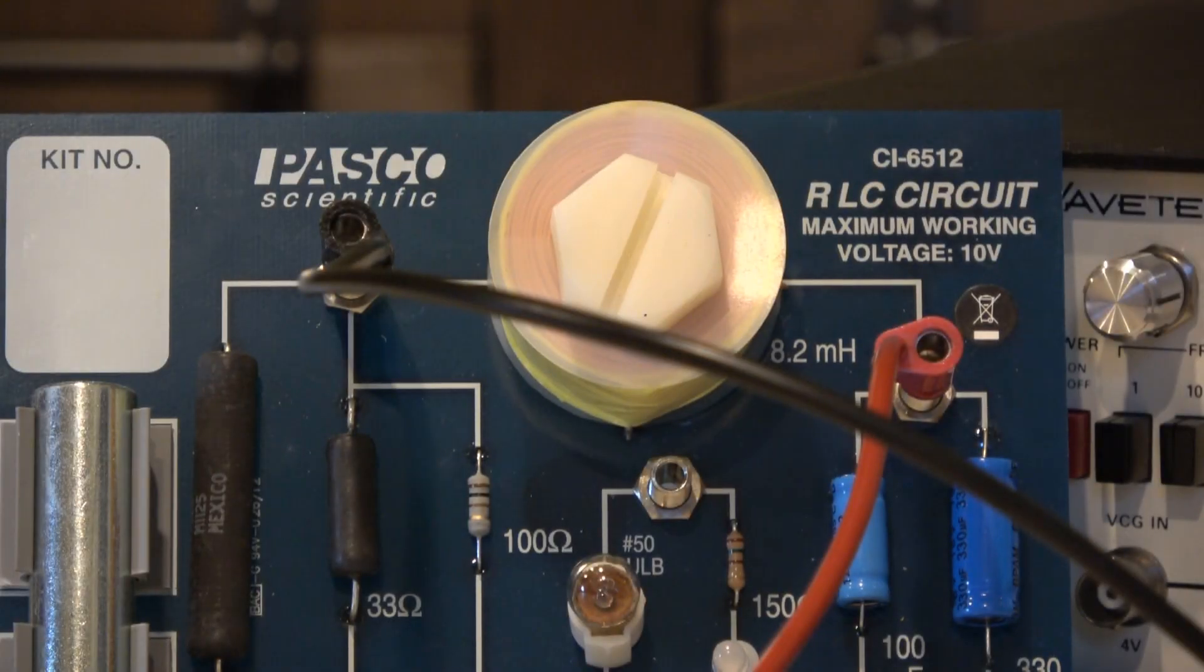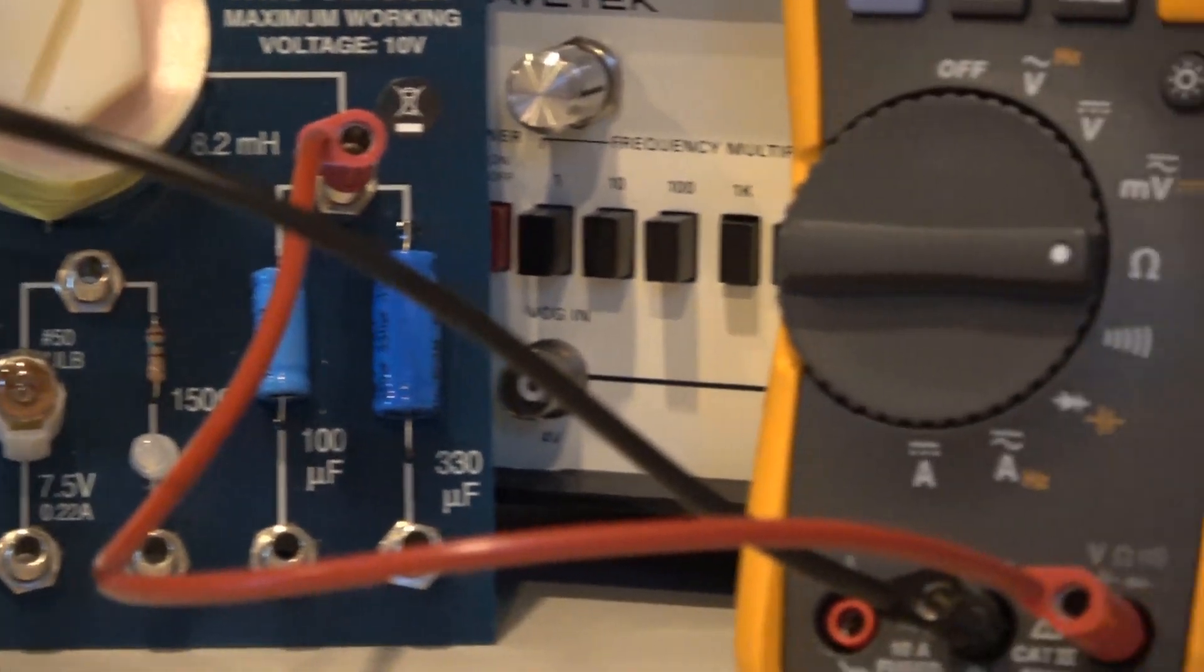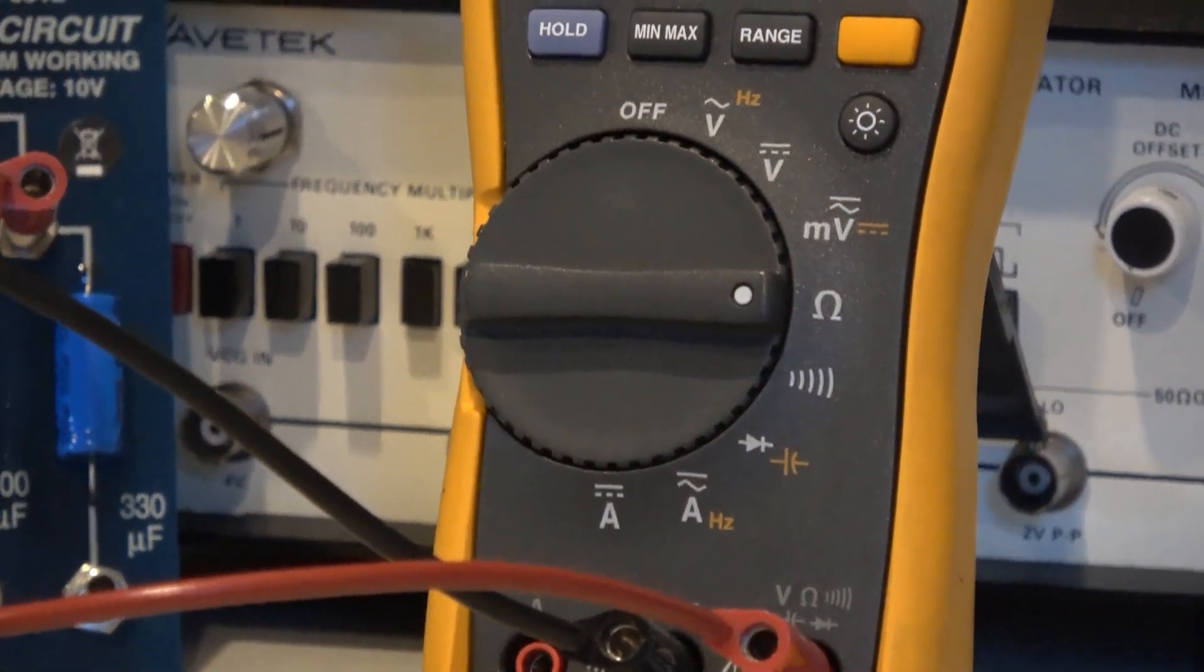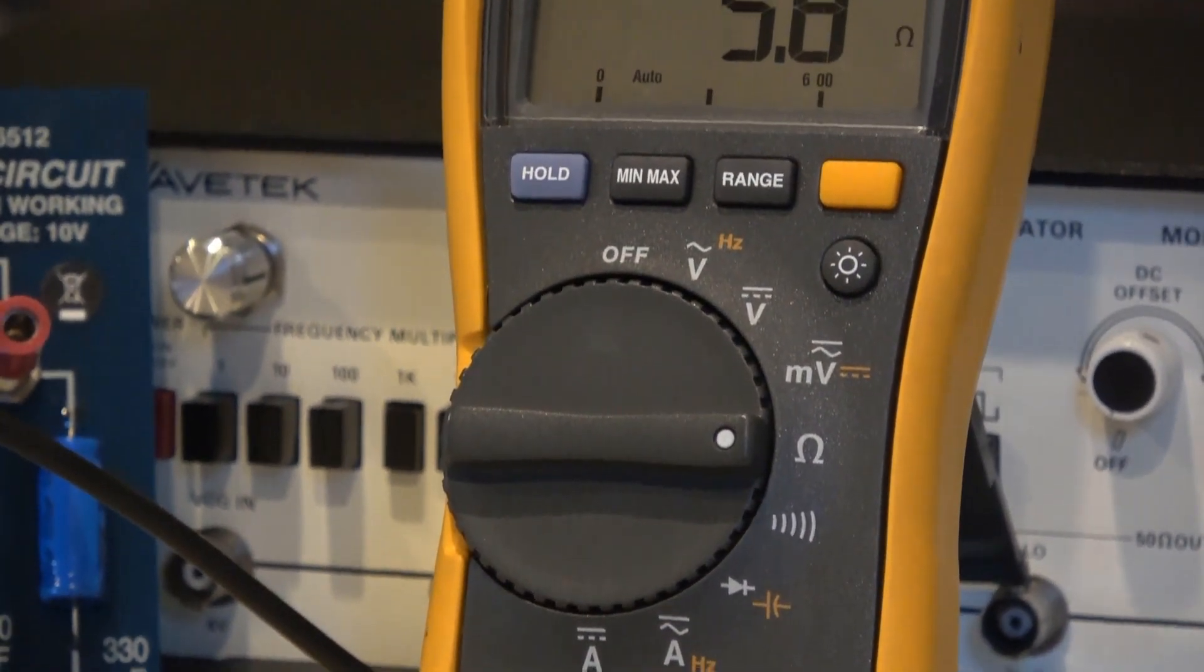And finally, we're going to hook up our leads across the inductor and put them into a DMM measuring resistance.